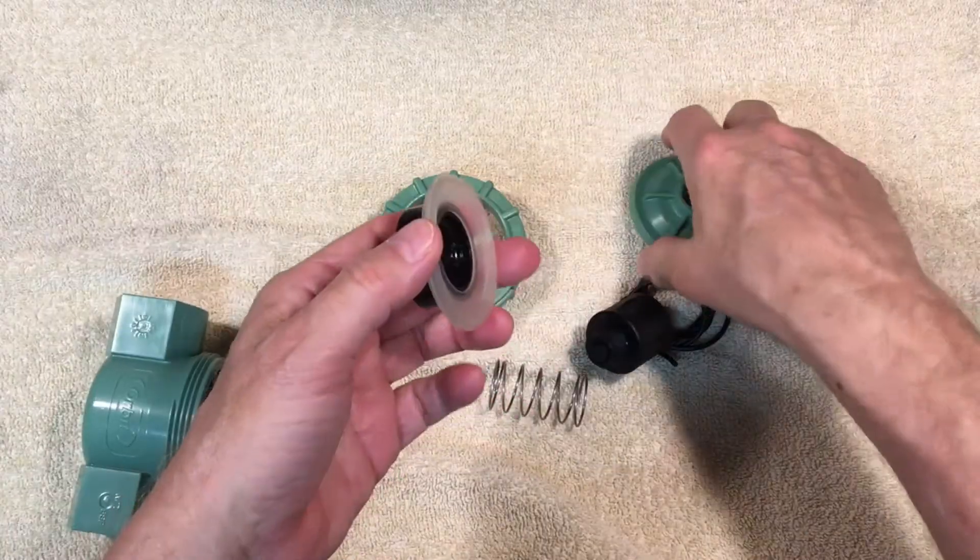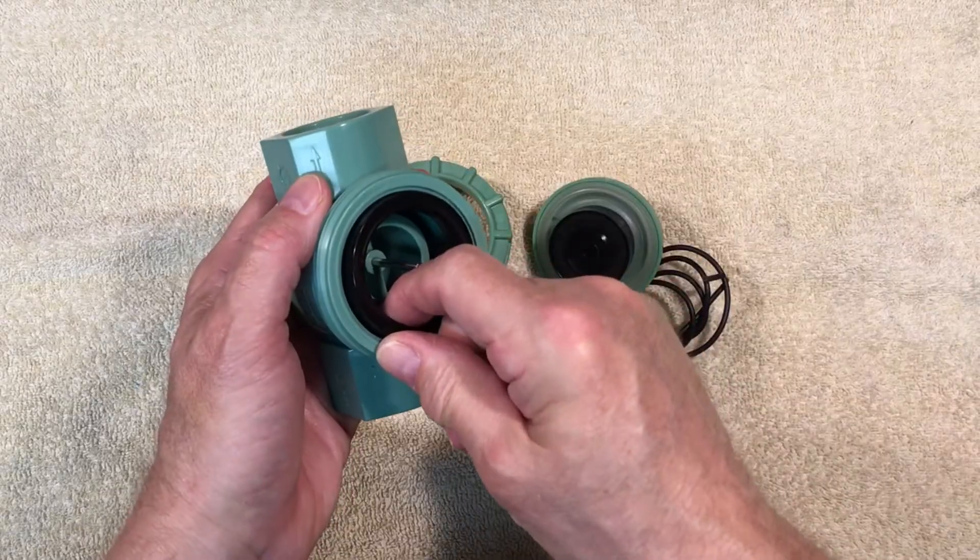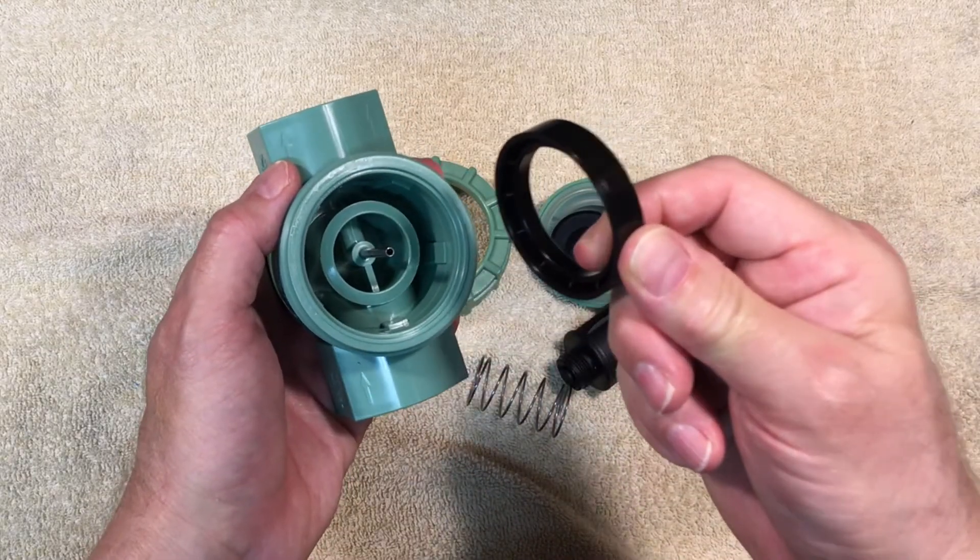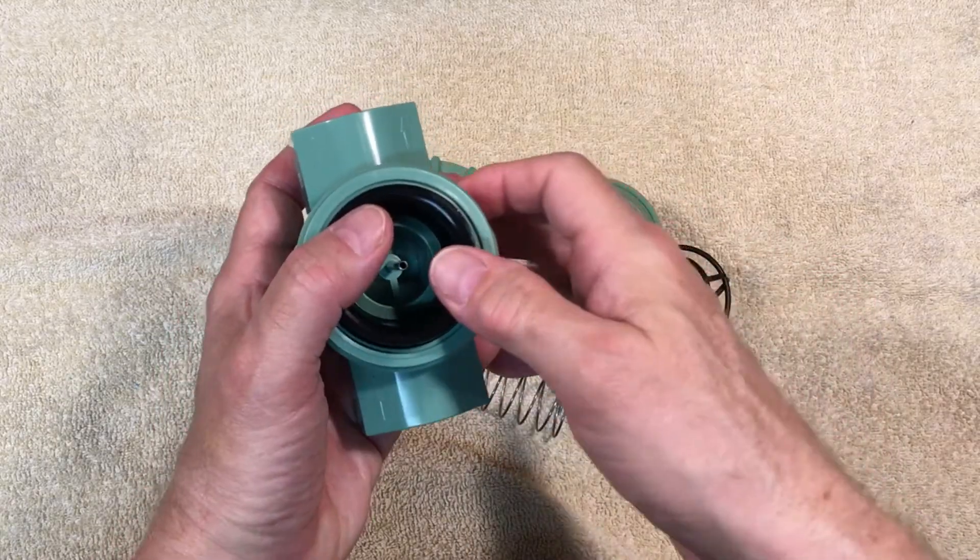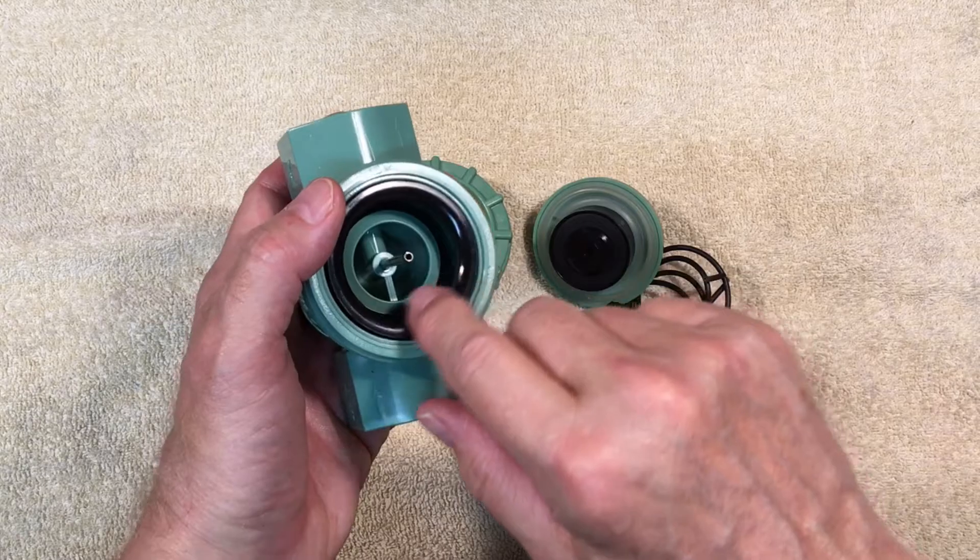There is also a hard plastic seat in the housing that you can remove. This seat helps to seal the edges of the diaphragm when the top is screwed down and keep water from leaking out of the edges.